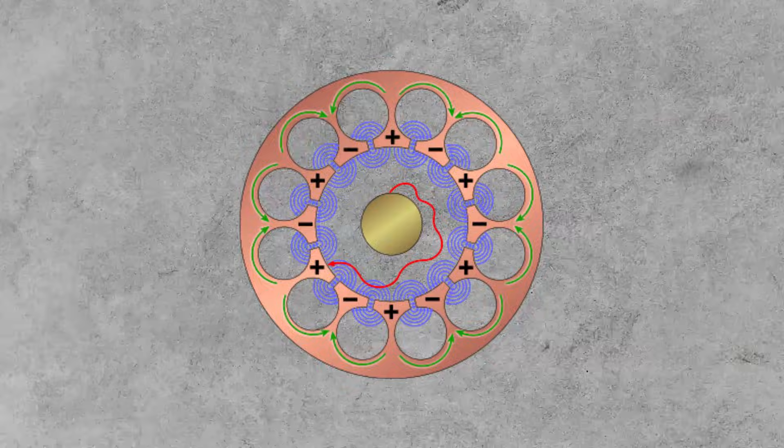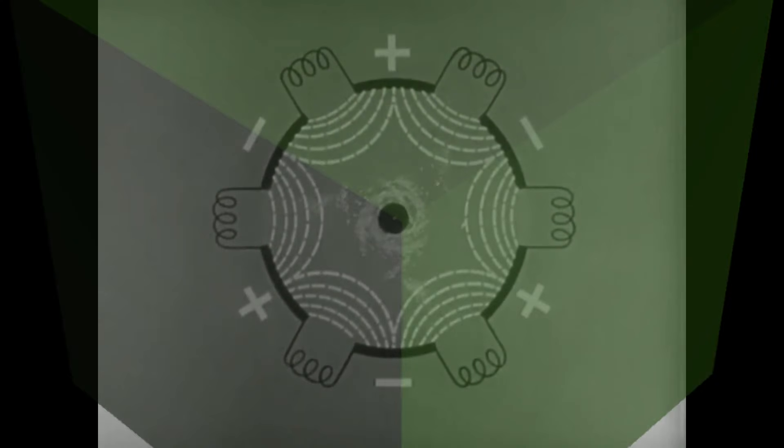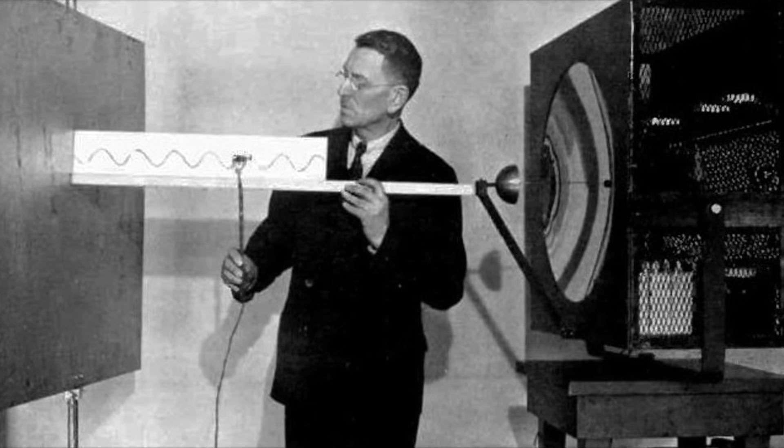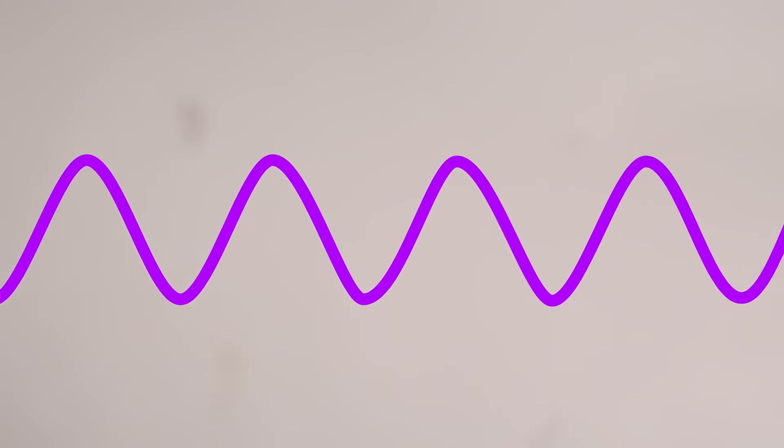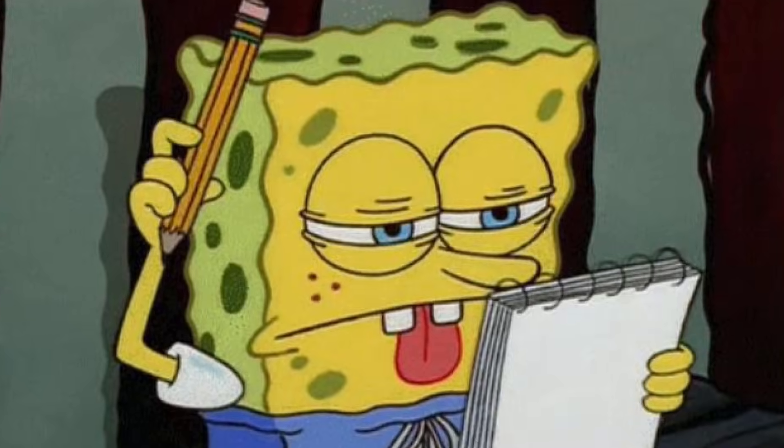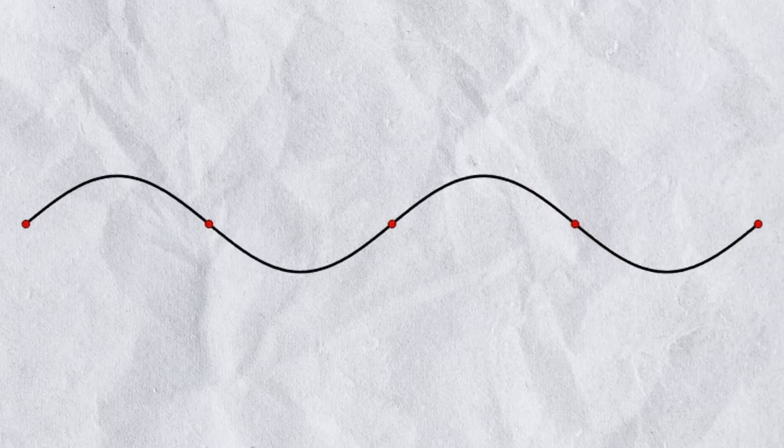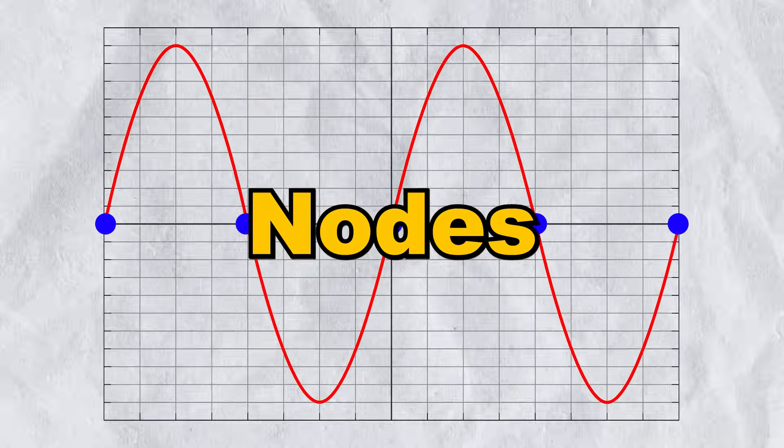A microwave has a magnetron which sends energy in the form of waves inside a metal box. Those waves can be expressed as an alternating sine wave. And looking at this, you might notice the points between the peaks and valleys will always remain at zero. They are cold nodes.